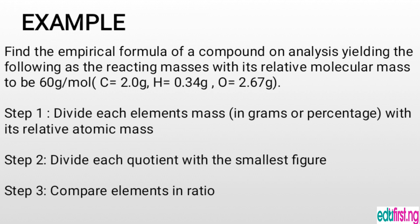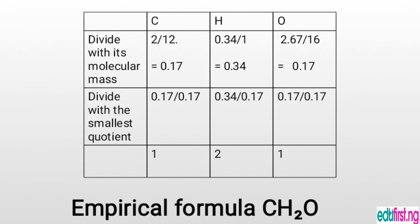What you do is divide the mass of each element — it could be in grams as in this example, or it could also be in percentage — by the relative atomic mass. The relative atomic mass of carbon is 12, hydrogen is 1, and oxygen is 16. Once you get your quotient from the division, you look for the lowest figure in that row and divide all other numbers by that lowest number.